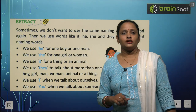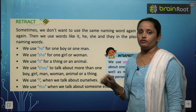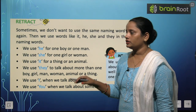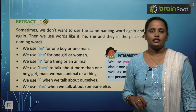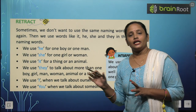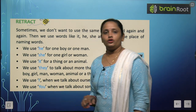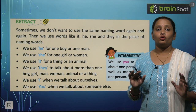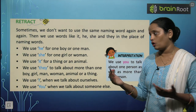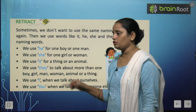We use She for a girl or woman. It is used for things or an animal. More than one boy, one girl, one man or one woman, animal or thing — we use They.